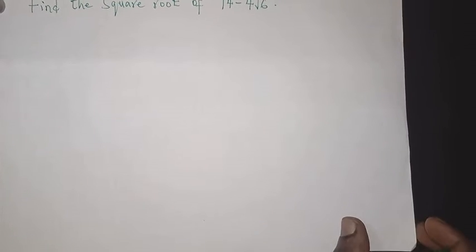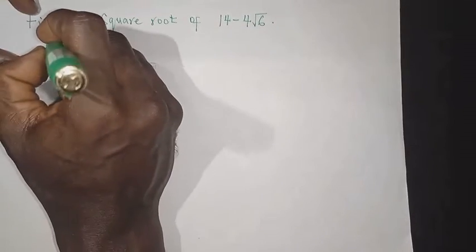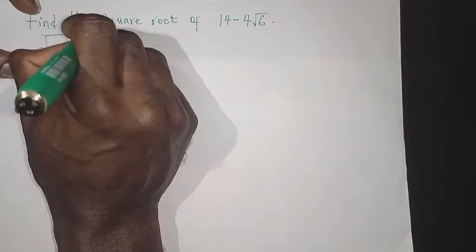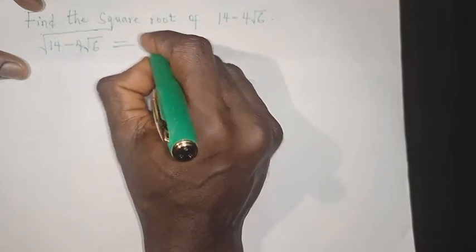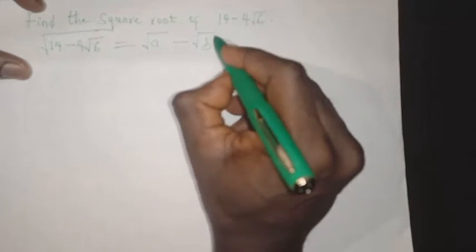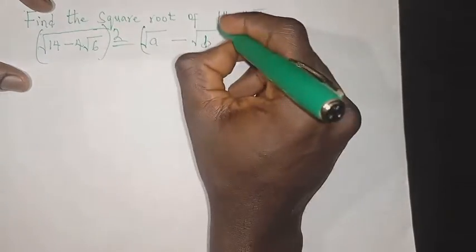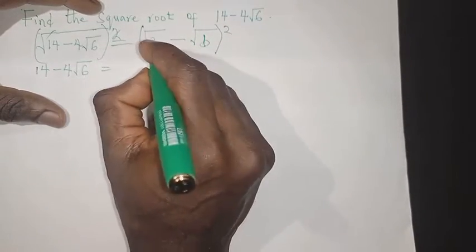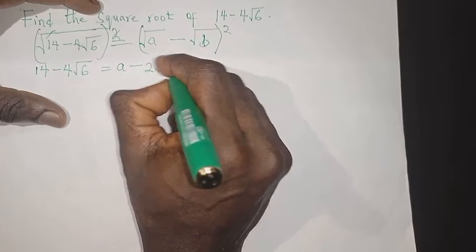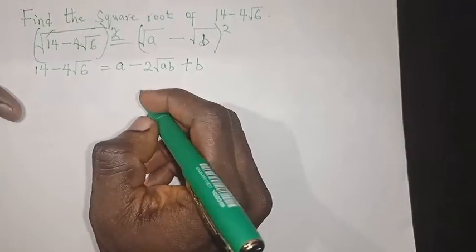Now let's look at another example: find the square root of 14 minus 4 root 6. Like we did initially, we let the square root of 14 minus 4 root 6 equal root a minus root b — this time it's minus root b because of the negative sign. Taking the square of both sides cancels the square root on the left, and expanding the right gives a plus 2 root ab plus b.